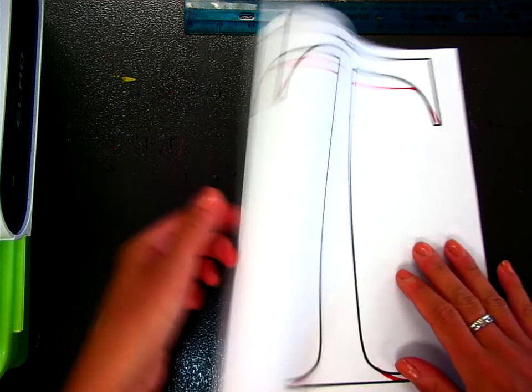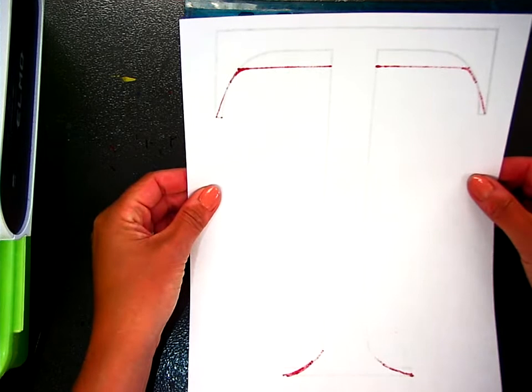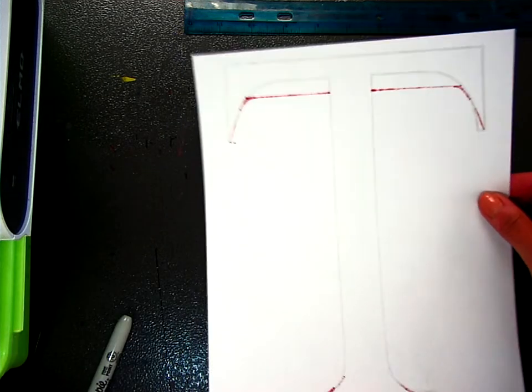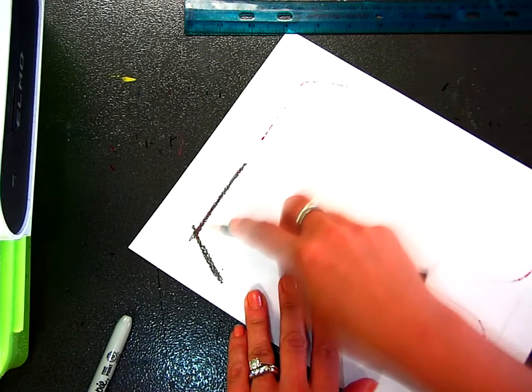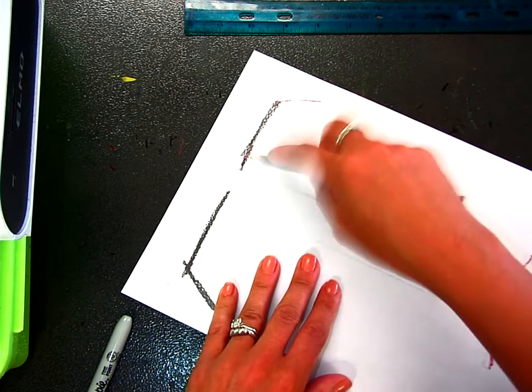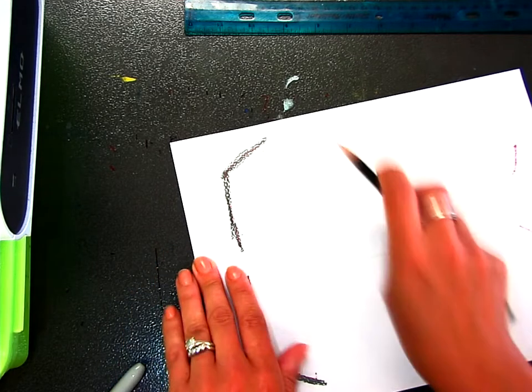So now when I flip it over and I go to do my trace, you can see that I can see through and I can see that sharpie line too. So I'm going to do the same thing as the other one. I'm going to shade. You want to go over any of the sharpie points and lines that you made.